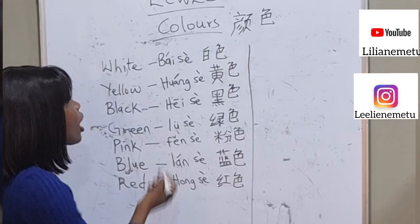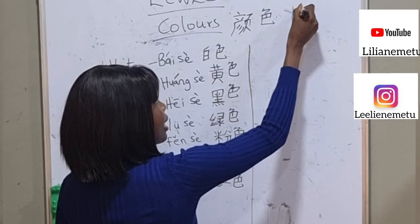So the first one — colors — is mentioned as 'Yen-se.' Yen-se means colors. Okay.